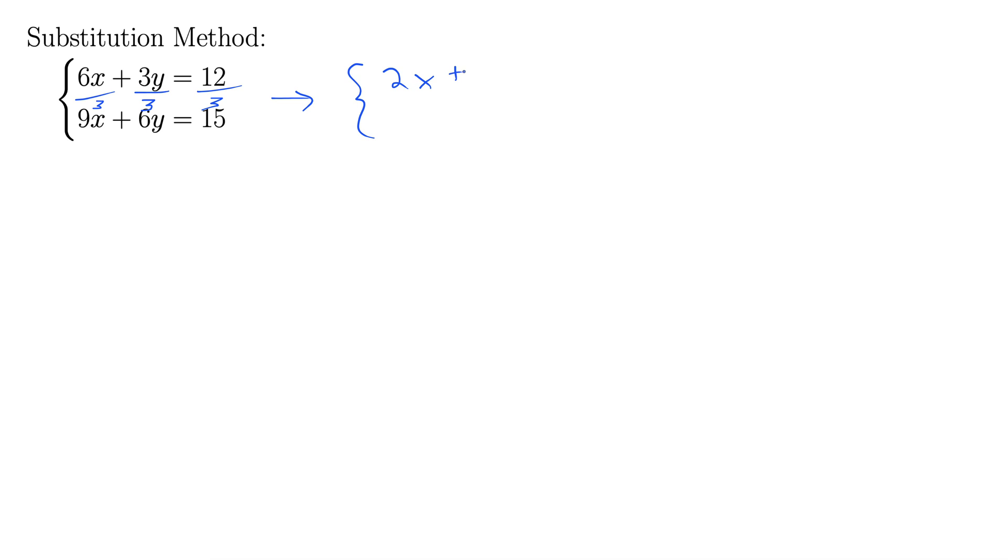2x plus y equals 4 on the top, and then the bottom stays the same, 9x plus 6y equals 15. Now we can solve this equation up here for y. So that gives us y equals 4 minus 2x.